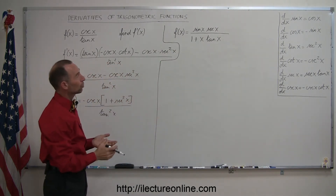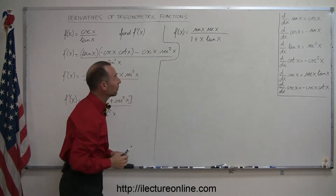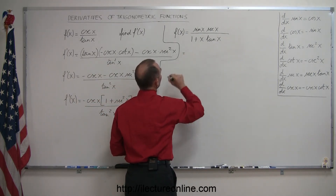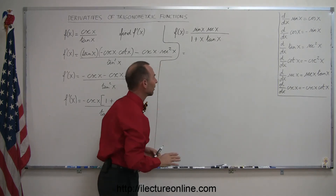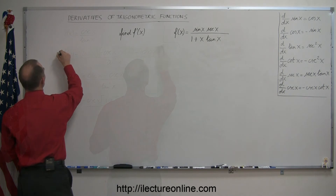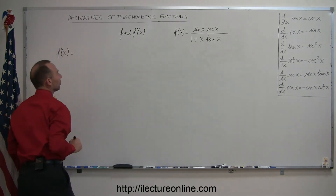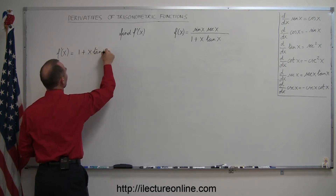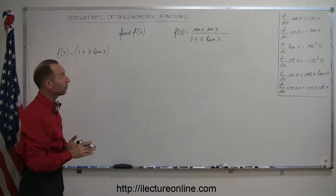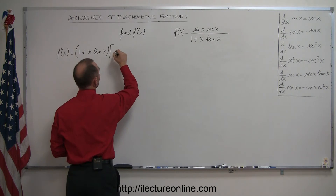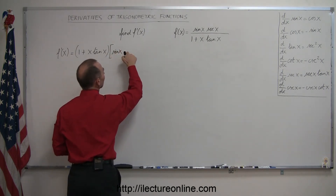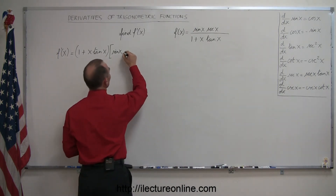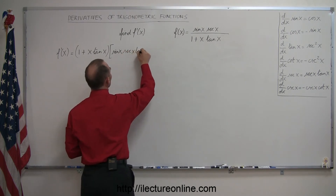So we'll probably have to use a combination of quotient and product rules. This is equal to the denominator, which is 1 plus x times tangent of x, times the derivative of the numerator — that's a product, so we use the product rule. I take the first, sine of x, times the derivative of the secant of x, the second, which is secant of x times tangent of x.